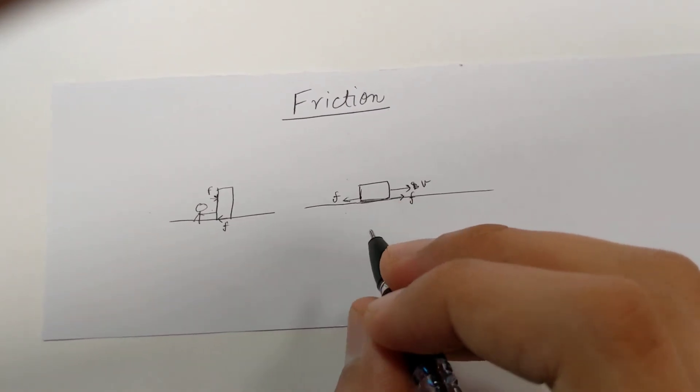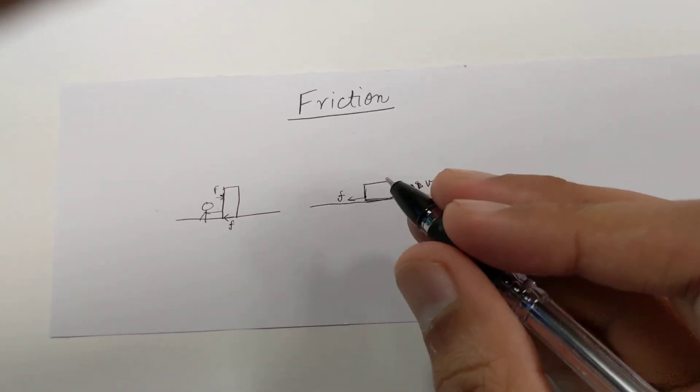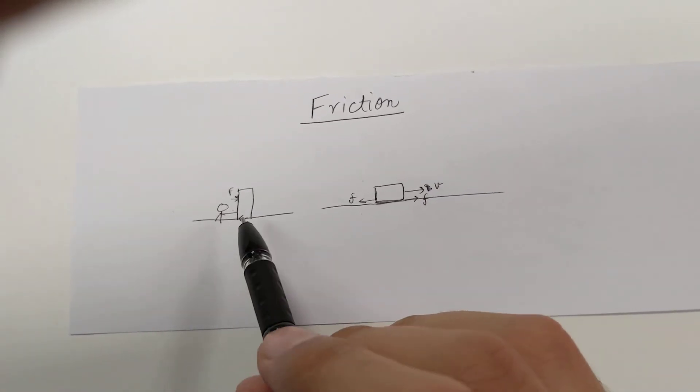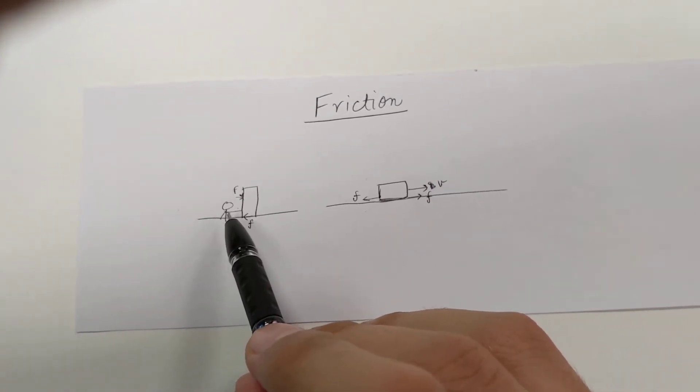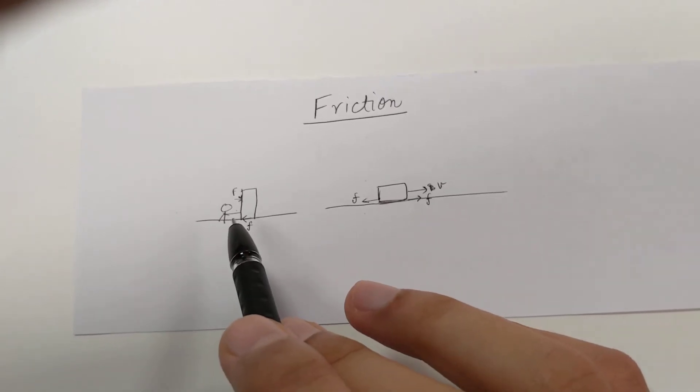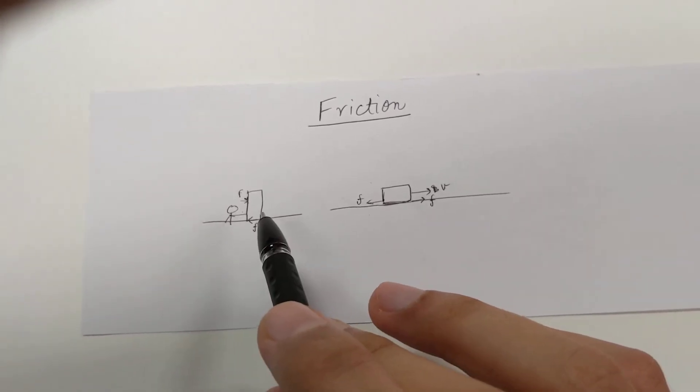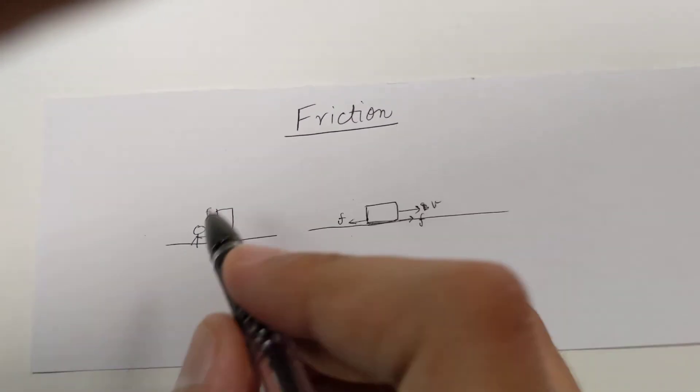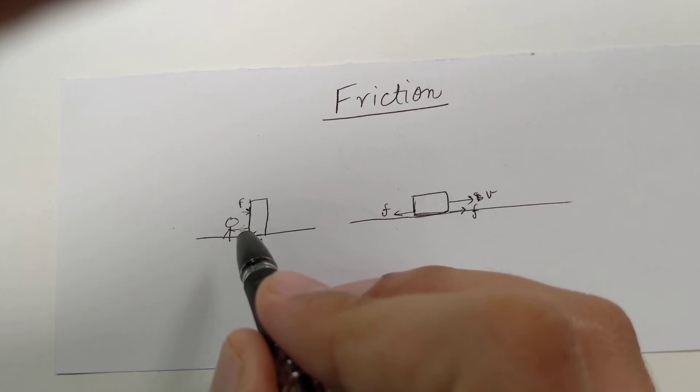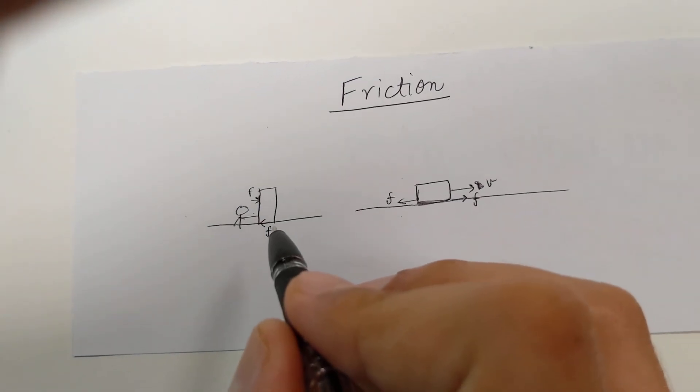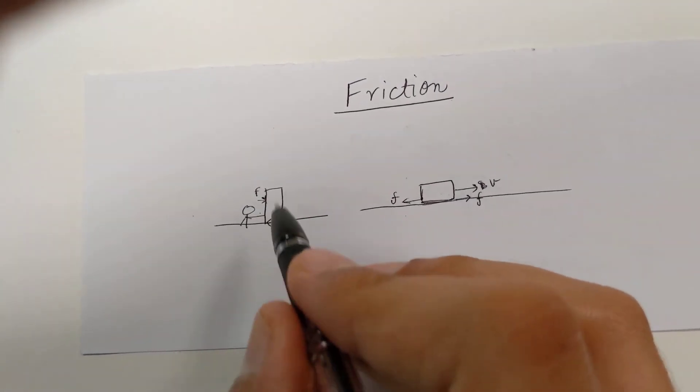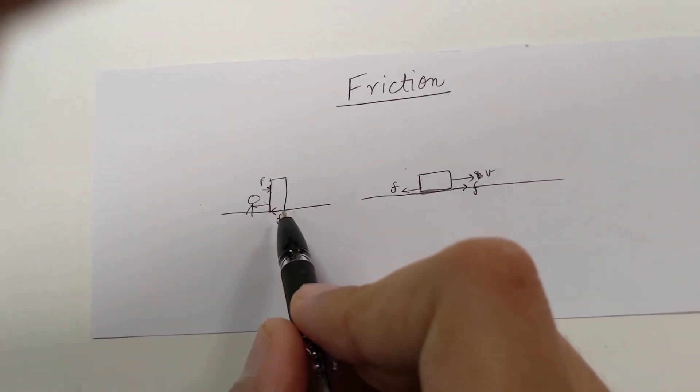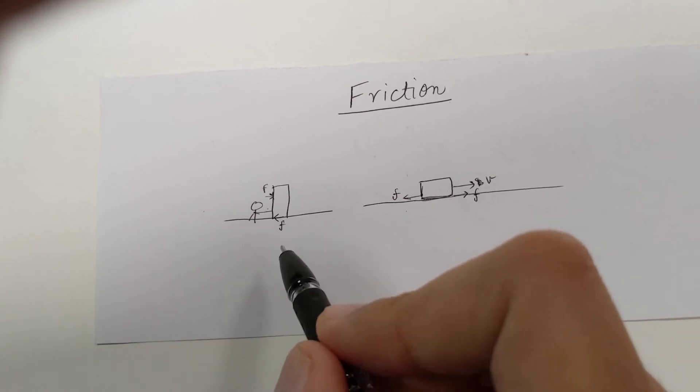It does not oppose motion, but it opposes the relative motion between two surfaces in contact. Suppose there is an almira and a person is trying to push it but is not able to by applying their force. They are applying a force capital F on the almira, and even if the almira is not moving, there is a force of friction between the almira and the ground.